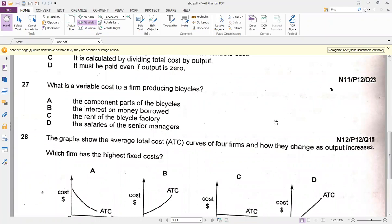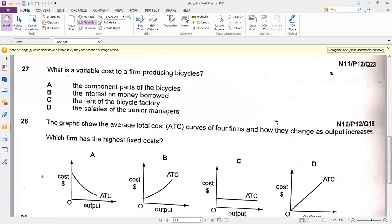Rent obviously is very clearly a fixed cost. Interest is the fixed amount which we are paying on the borrowed money from the bank every month. So we are left with the component parts. The more bicycles you're producing means that more components will be required to manufacture or make it. So that means this is going to be the variable cost.